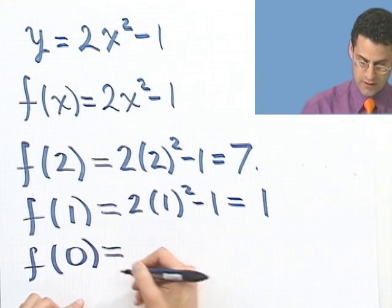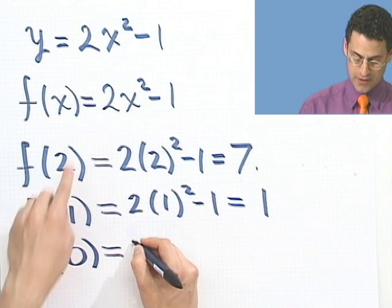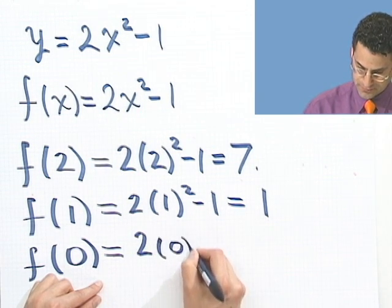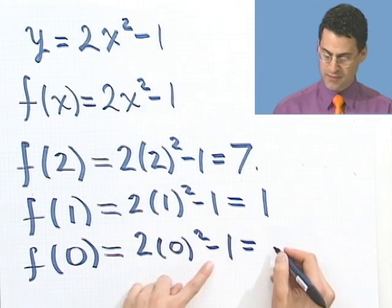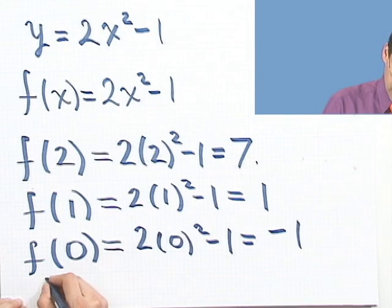So for example, what would be f of 0 be? Well, wherever I see an x, I plug in a 0. So I put a 0 in here. 0 squared is 0 times 2 is 0 minus 1 is negative 1. So once you start getting the hang of it, not a bad thing. Let's try a really hard one.